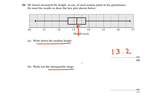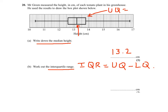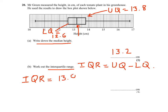Now we need to work out the IQR, which is the upper quartile take away the lower quartile. The upper quartile is this one here, it's equal to 13.8, and the lower quartile is this, and it's equal to 12.6. So IQR is 13.8 take away 12.6, and that gives me 1.2 cm.